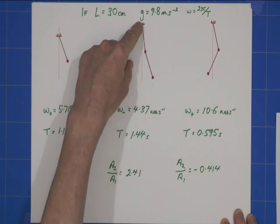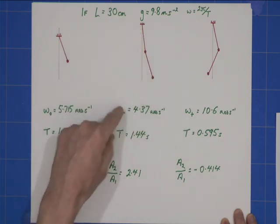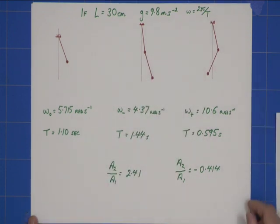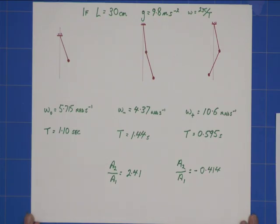For the lower normal mode, we get, which is this one, we get these values, and for the higher mode, we get that. So, if you have built it, and you've managed to do some timings, I hope you get pretty close to these values. Thank you.